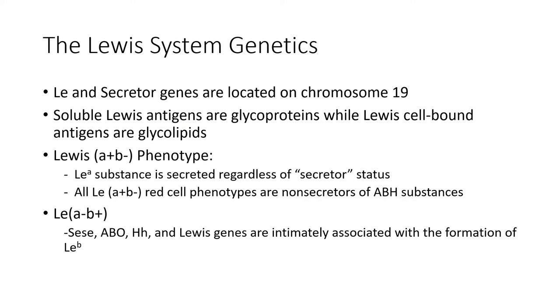The Lewis and secretor genes are located on chromosome 19. The soluble Lewis antigens are glycoproteins while Lewis cell-bound antigens are glycolipids.